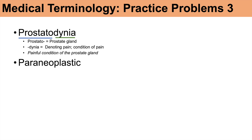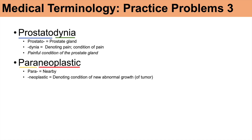The next word is paraneoplastic. Breaking it down: 'para' means nearby. We can further break down 'neoplastic' — 'neo' means new, and 'plast' or 'plasm' means growth. So neoplastic is a condition of new abnormal growth of a tumor. Paraneoplastic, when we put this together, really means nearby an abnormal growth — nearby a tumor.